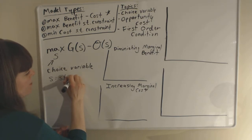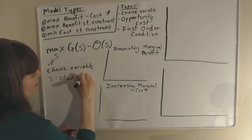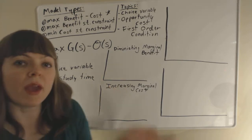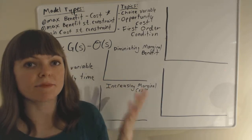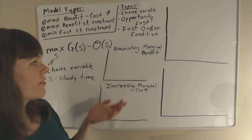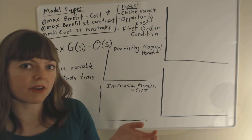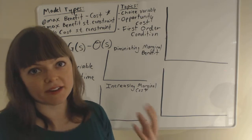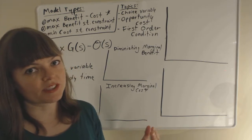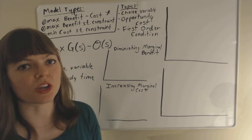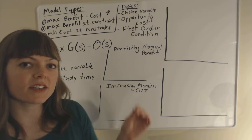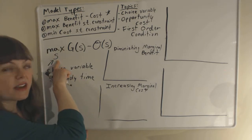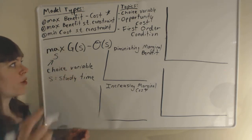S is study time. The student weighs the costs of studying against the benefits. Without both costs and benefits, we might get zero hours studied or an infinite number of hours studied — neither of which works in a model. We need two forces pulling our choice of hours in both directions.